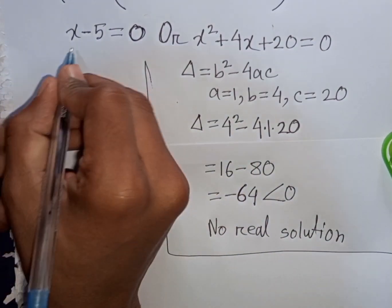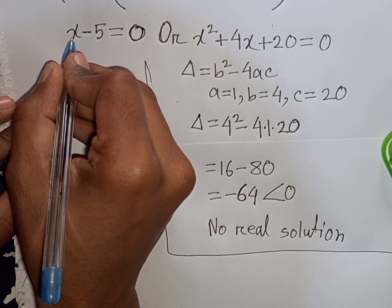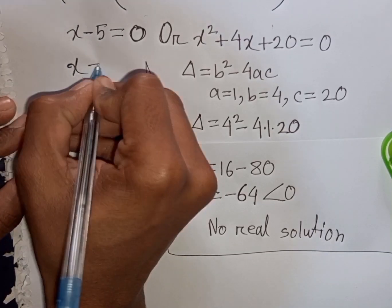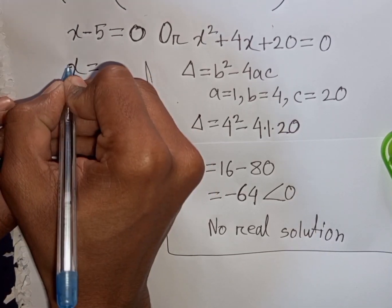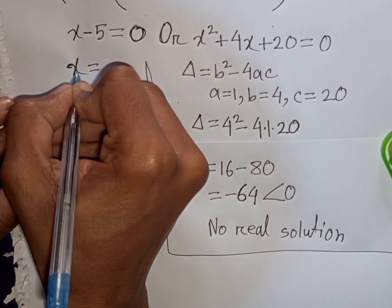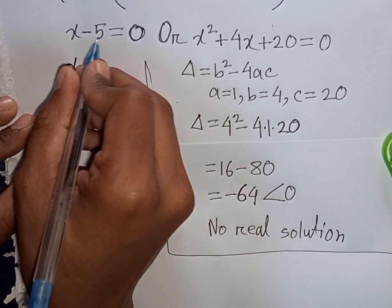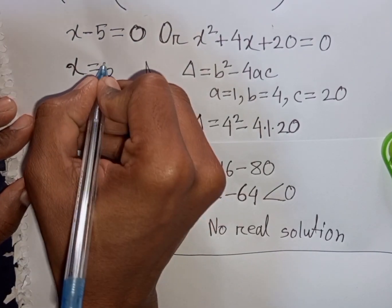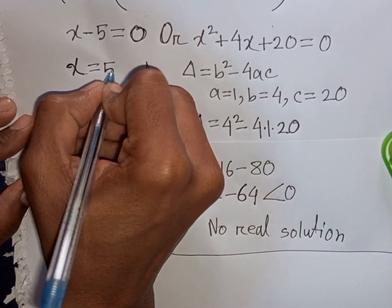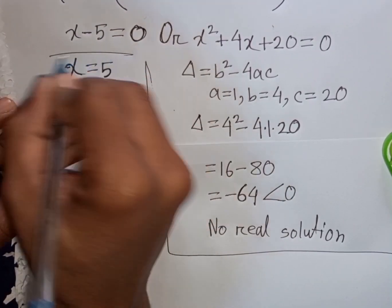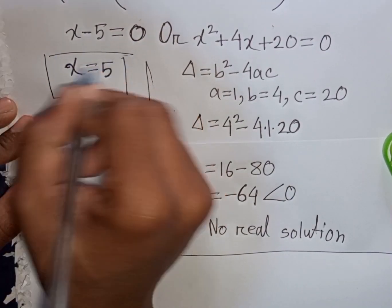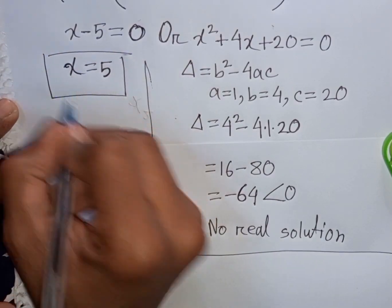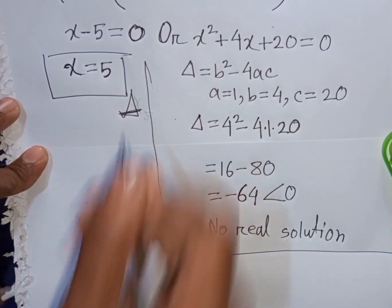From x - 5 = 0, taking -5 to the right side gives x = 5. So x = 5 is the value of x. This is our final answer.